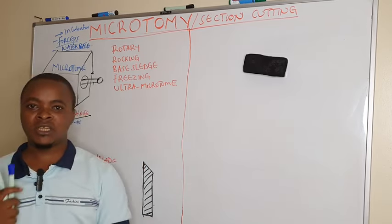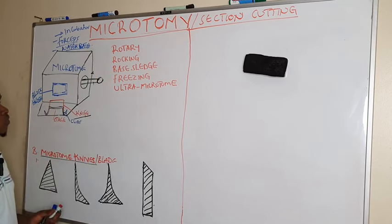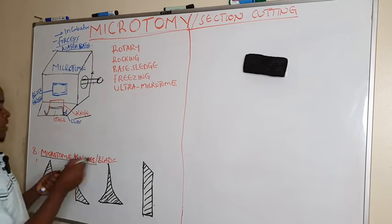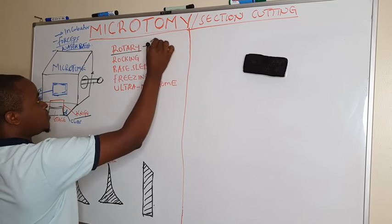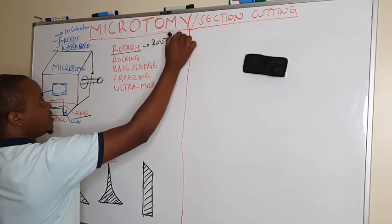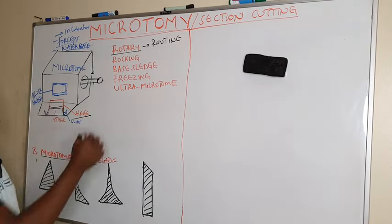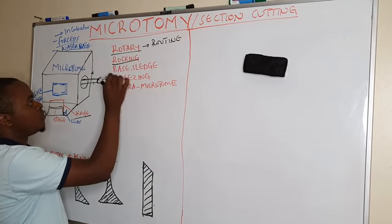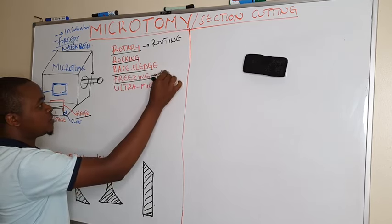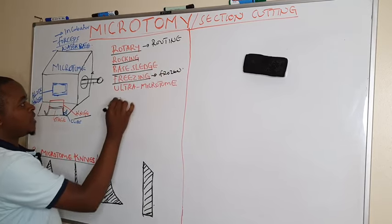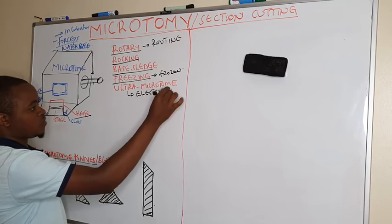The materials used include microtome machines. One of the microtome machines commonly used is the Rotary Microtome, which is most commonly used and is routinely used for paraffin sections or paraffin embedded tissues. Other types include the locking microtome, base sledge, freezing microtome for frozen sections, and the ultramicrotome, which is used for cutting sections for electron microscopy.